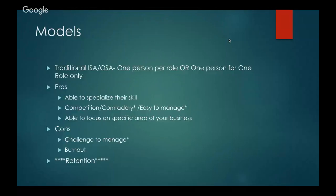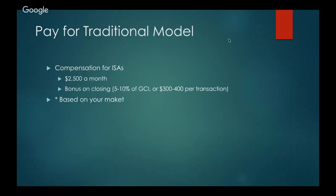Compensation for ISAs: in our market, we pay $2,500 a month and bonus them 5 to 10% of GCI, or $300 to $400 per transaction. In Austin, where you can't find a home for less than $300,000, a 5% GCI bonus is healthy. You want to examine your market and determine what makes sense based on the average sales price your team brings in. In some situations, a flat fee of $300 to $400 per transaction makes more sense.